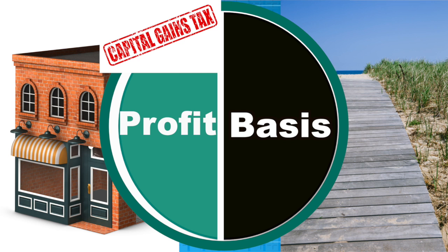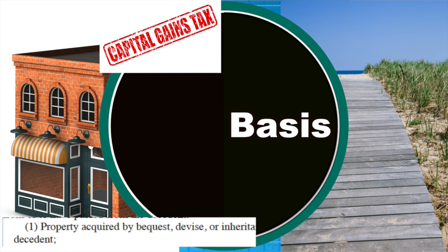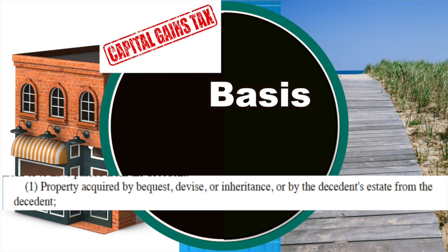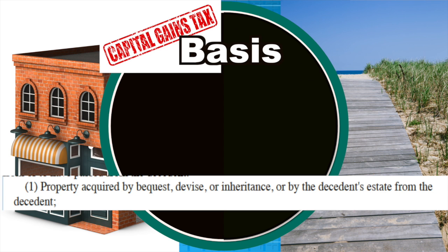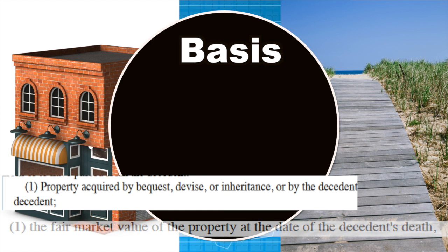Property that was owned outright by a taxpayer who passes it on as a bequest, devise, or inheritance gets a step up in basis upon the owner's death. Surviving family members won't have to pay a capital gains tax if they sell the property for what it was worth on the day of the owner's death, because the basis is stepped up.